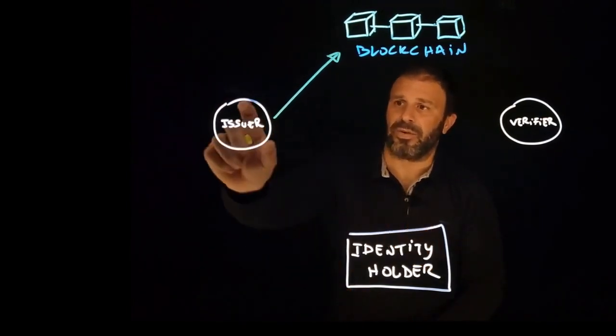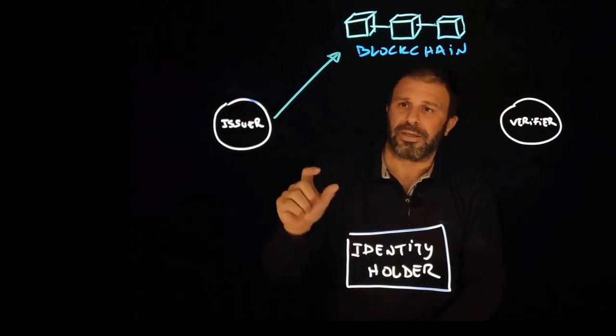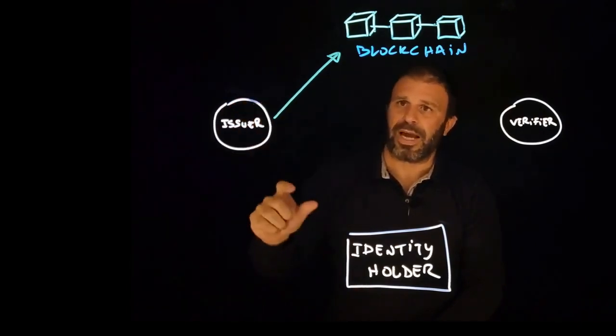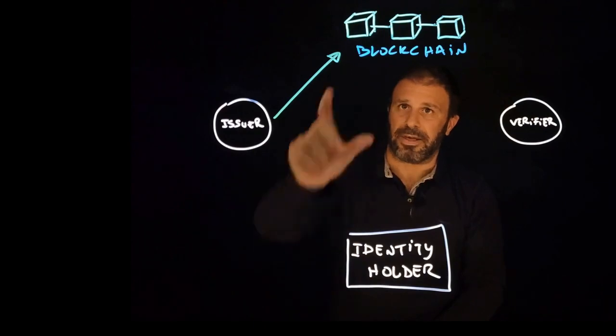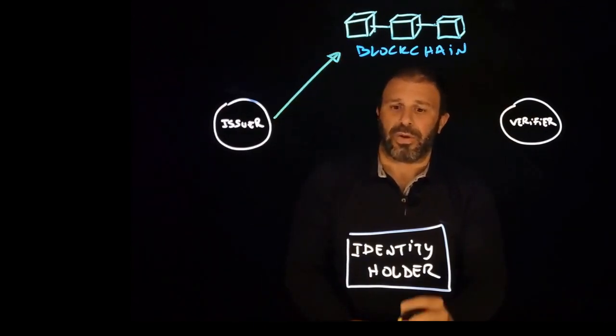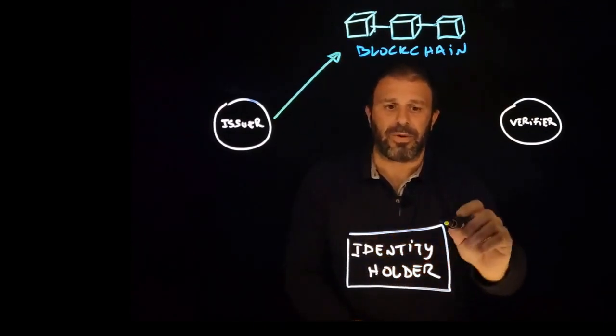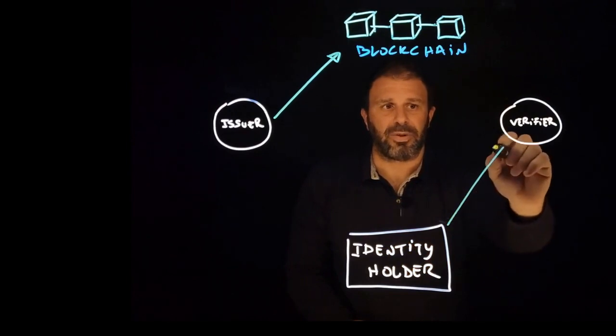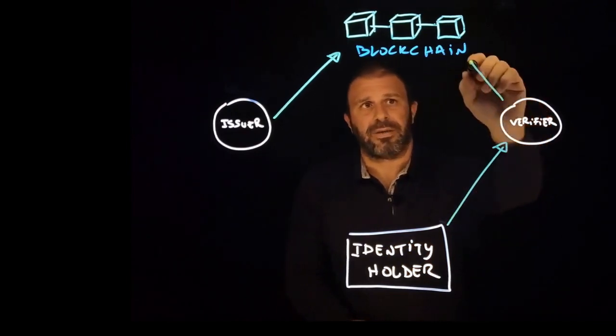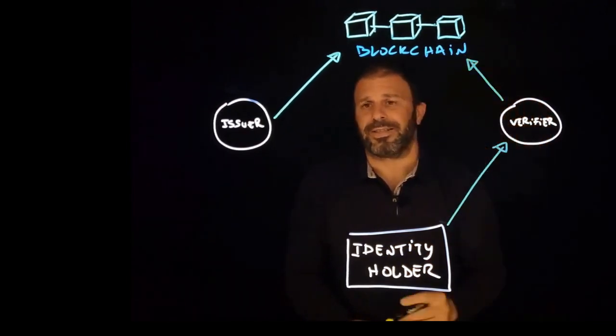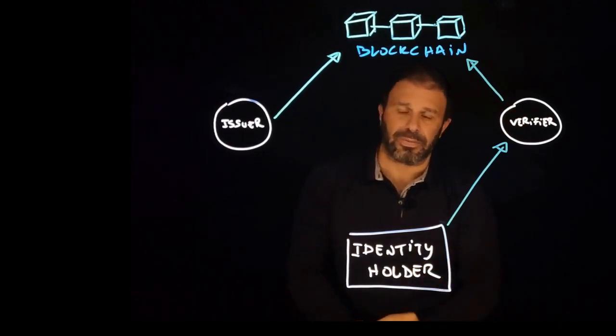The identity state of the issuer contains a Merkle tree of revocations. So they update that identity state on the blockchain. So the next time an identity holder presents these credentials, the verifier can check on the blockchain if they are still valid or not, if they have been revoked or not.